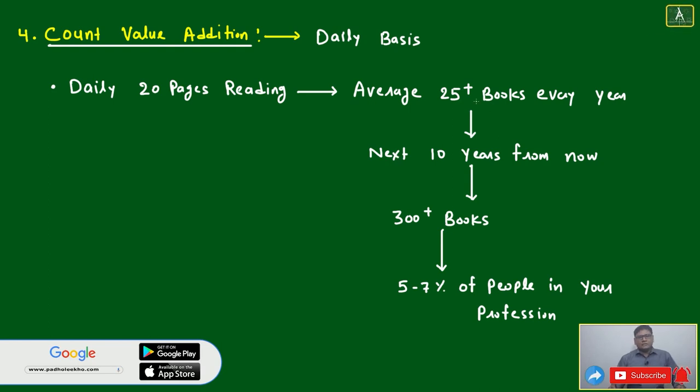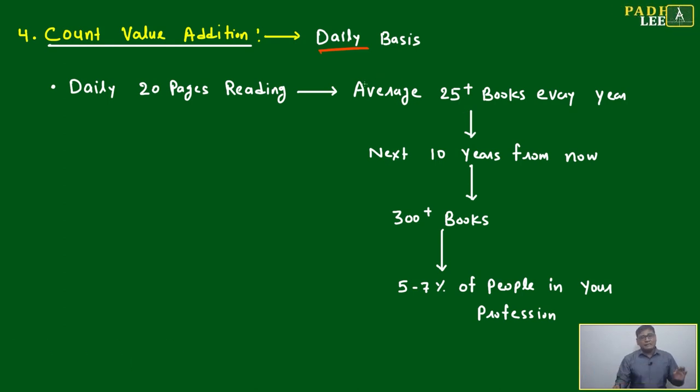To count our value addition on a daily basis, not weekly, not monthly, not annual—daily basis. Just suppose I'm giving you an example: if daily you are reading 20 pages, what will happen? Average 25 plus books every year you will be able to read long term.